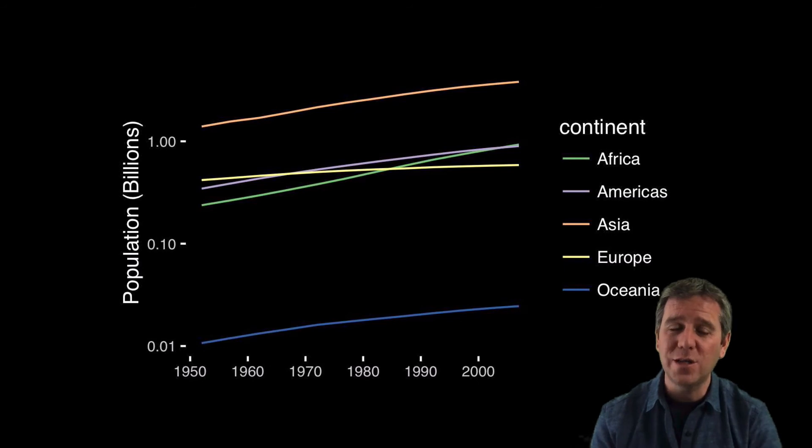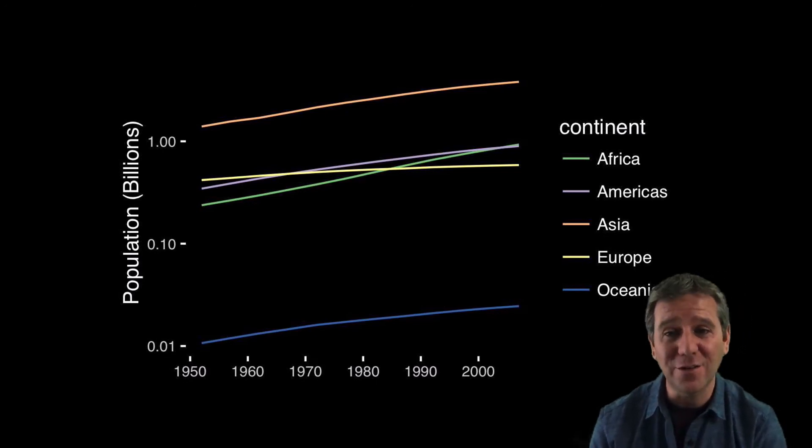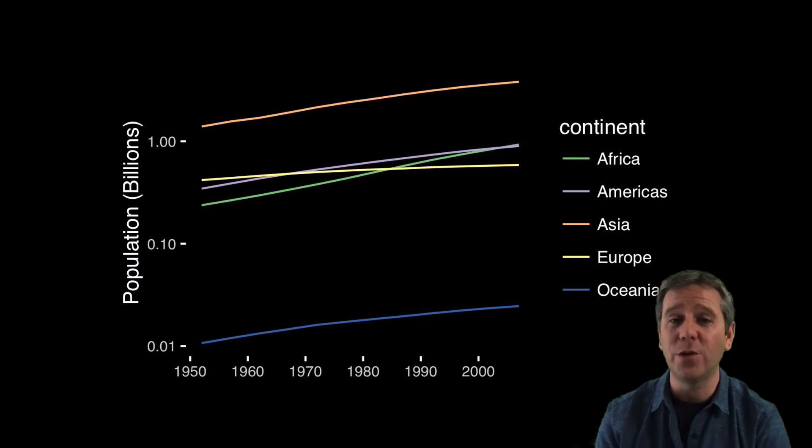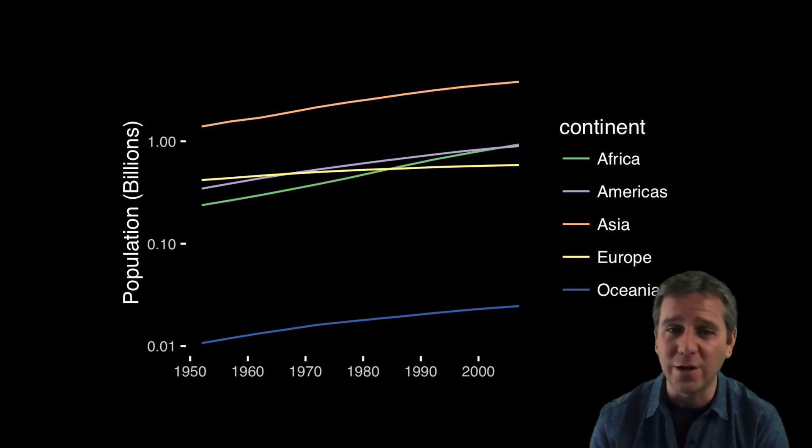We use this type of display all the time in traditional line plots like this one. This data is from the Economist magazine, a traditionally excellent source of good data visualizations. This was from an article concerned with population growth and exhaustion of natural resources in certain regions around the world.